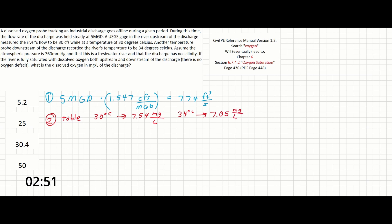Now that we have our DO concentrations, we can set up and solve the mass balance. Our discharge flow rate is going to be given as 7.74 cubic feet per second, and our DO concentration is unknown here. The river flow was given as 30 CFS upstream of the discharge, and the 30 degrees gave us a DO concentration of 7.54 mg per liter.